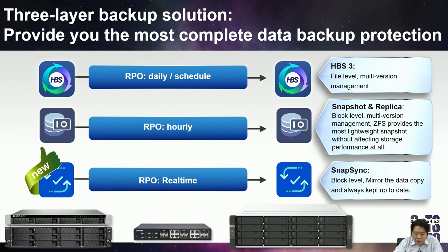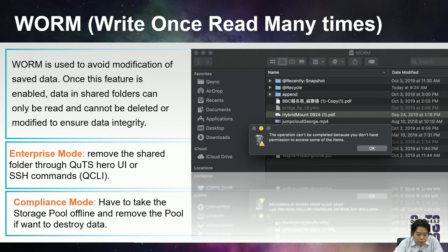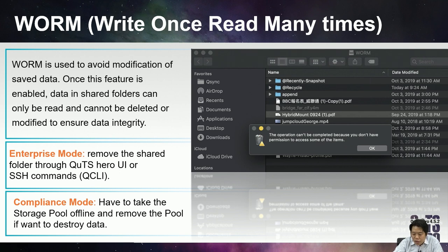SNESync is the new release in H4.5.2 — a real-time backup solution that helps users mirror data immediately and keep it always up to date, with the primary and secondary NAS synchronized anytime, anywhere. QTS Hero also provides WORM (Write Once, Read Many) for special customers. WORM prevents modification of saved data — once enabled, data in a shared folder can only be read and cannot be written or modified. This is typically used by special departments like the military, secret agencies, courts, and hospitals to preserve important data.